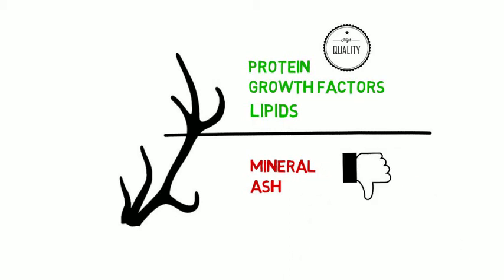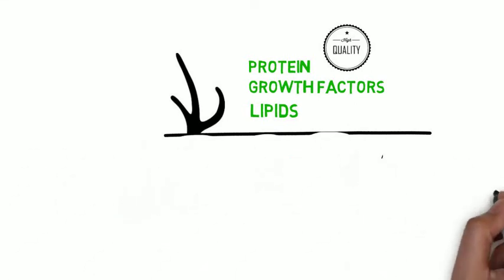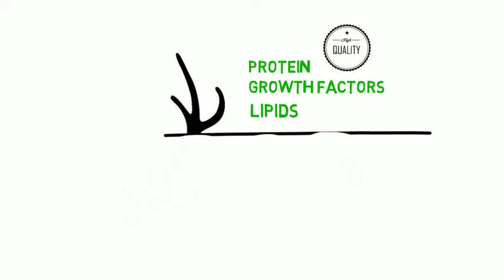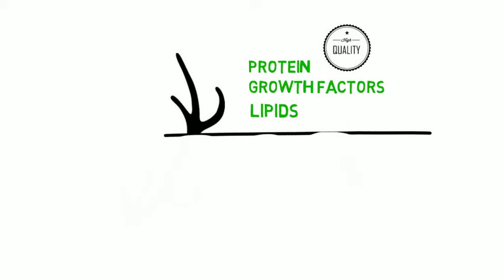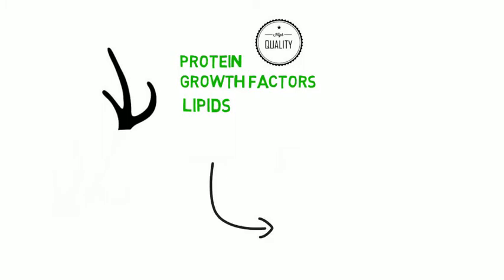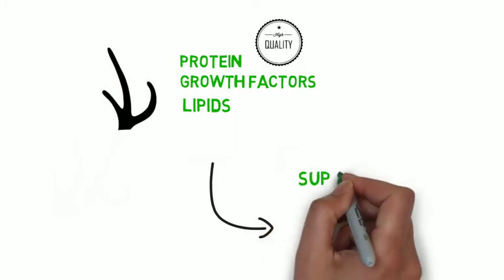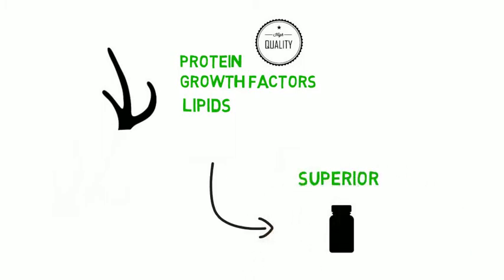Antler Farms uses only the best components to produce the strongest deer antler velvet supplements. We use only the tips, upper and middle sections in the production of our deer antler velvet capsules. By excluding the low-yielding parts of antler, Antler Farms produces a nutrient-rich deer antler velvet that is superior to any other product on the market.